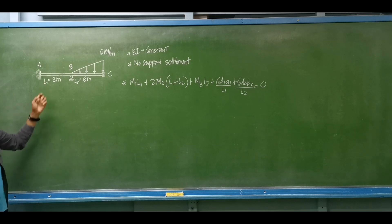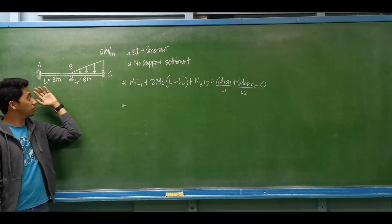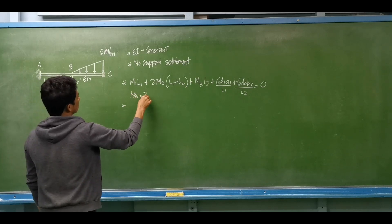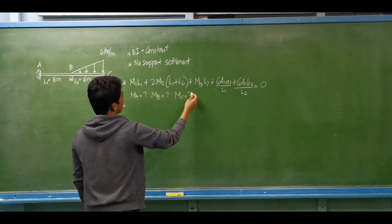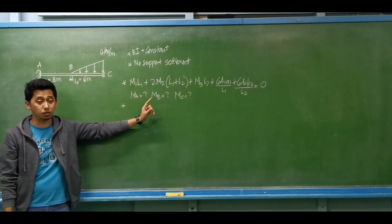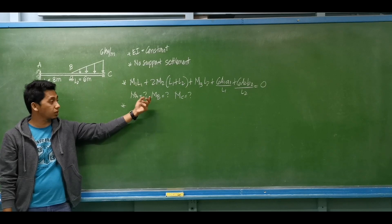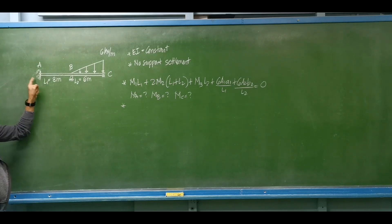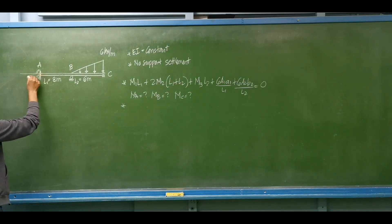To start the analysis, if we directly substitute all the assumed unknowns — the moment at A, the moment at B, and the moment at C — and consider span ABC directly, we get only one equation but we have three unknowns, so we cannot solve directly. The first step is to introduce an imaginary span just before the fixed support at A and just after the fixed support at C.